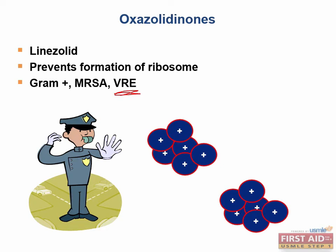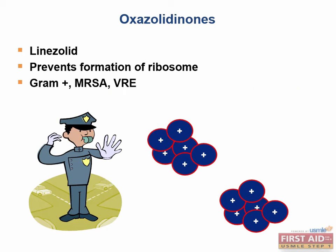Bacteria such as enterococci become resistant to vancomycin by converting the D-alanine-D-alanine residue into D-ala-D-lac, making vancomycin unable to bind to the peptide. The four toxicities associated with vancomycin are nephrotoxicity, ototoxicity, thrombophlebitis, and red man syndrome. In a patient with chronic kidney disease, vancomycin might not be appropriate, making linezolid an option to treat MRSA.